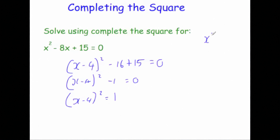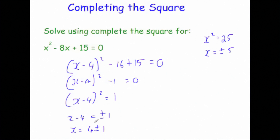Now we square root both sides — be careful here. If you have x squared equals 25, the answer isn't just 5; it's plus or minus 5, because minus 5 squared is also 25. So square rooting gives x minus 4 equals plus or minus 1. You'll recognise that plus or minus sign from the quadratic formula. Adding 4: x equals 4 plus or minus 1. So x equals 4 plus 1, which is 5, or x equals 4 minus 1, which is 3.